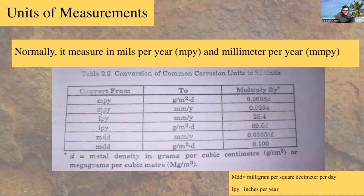From mils per year to millimeter per year, we multiply by 0.0254, and inches per year to millimeter per year 25.4, inches per year to gram per meter square times density 69.5 D and so on.